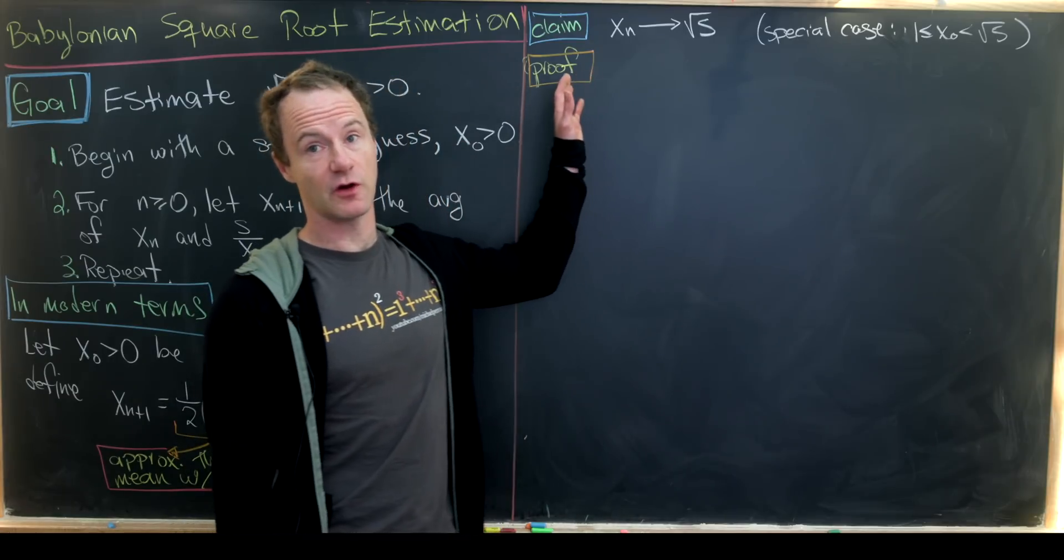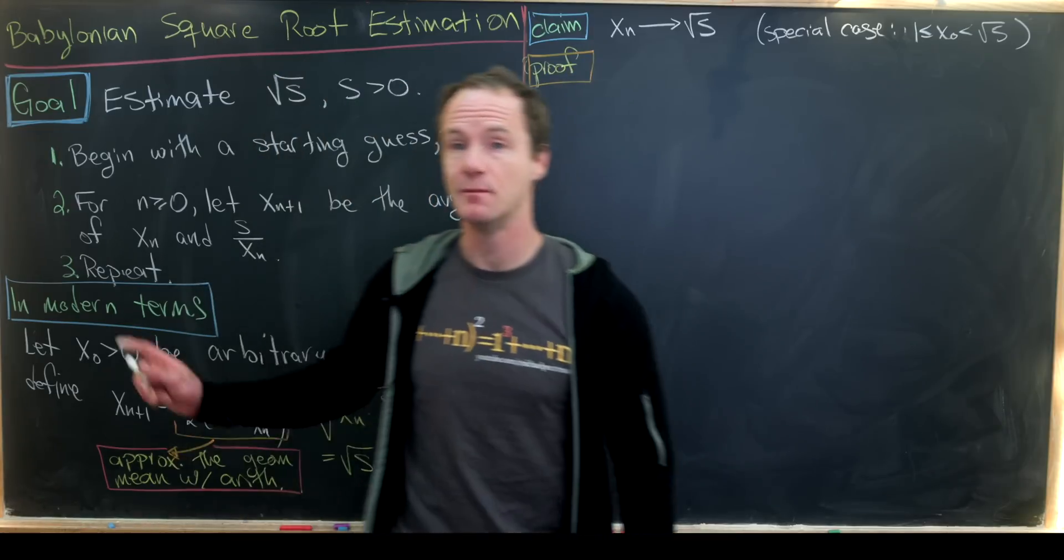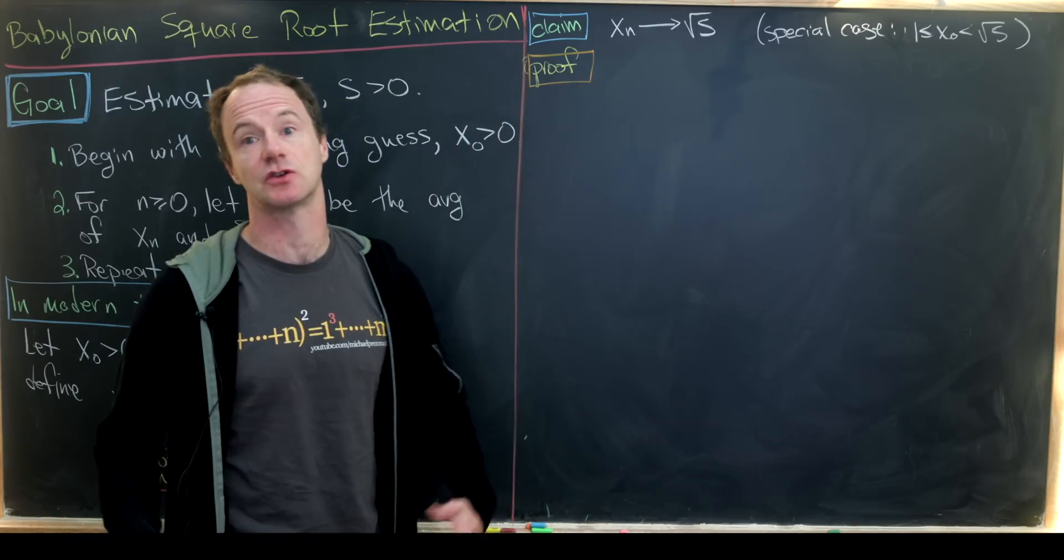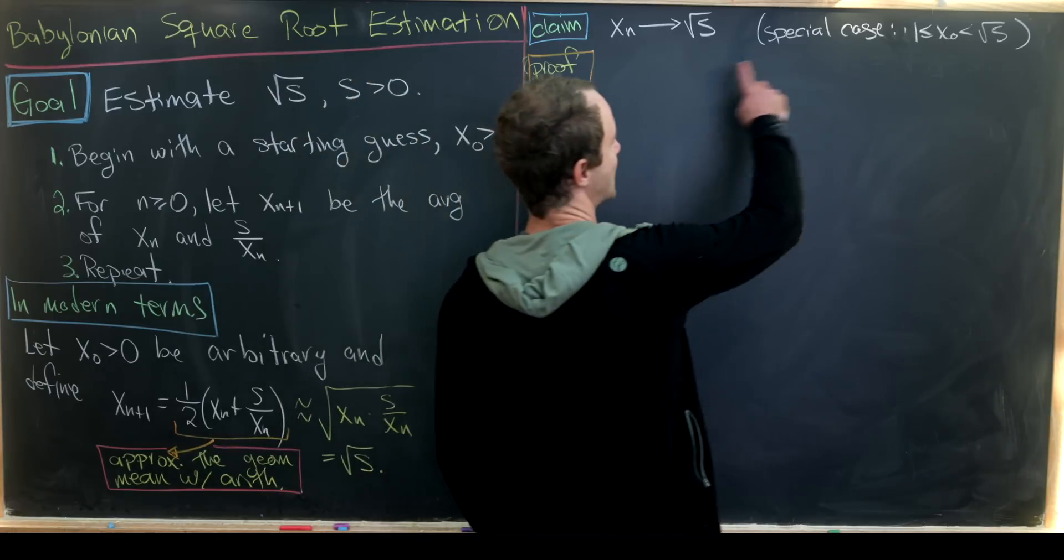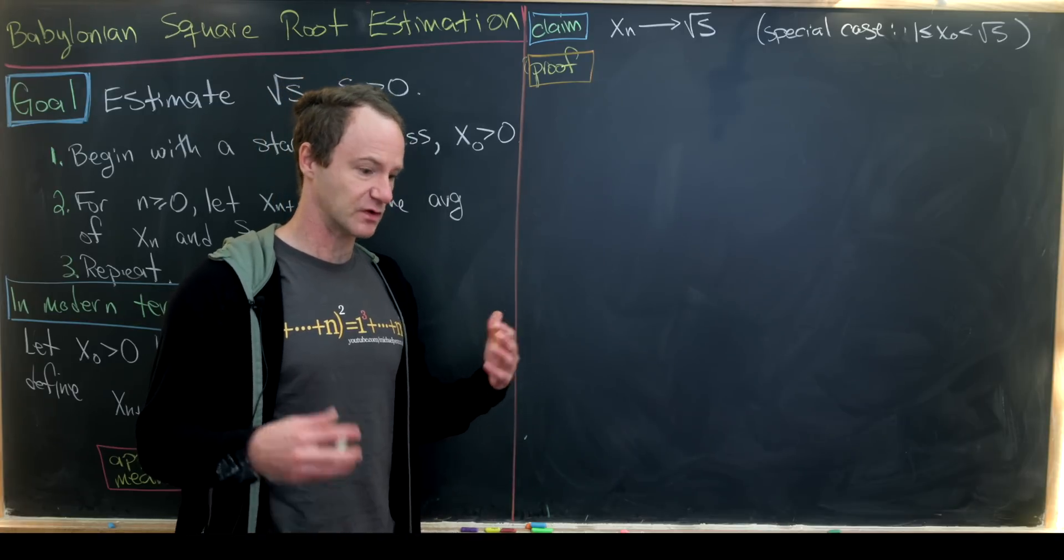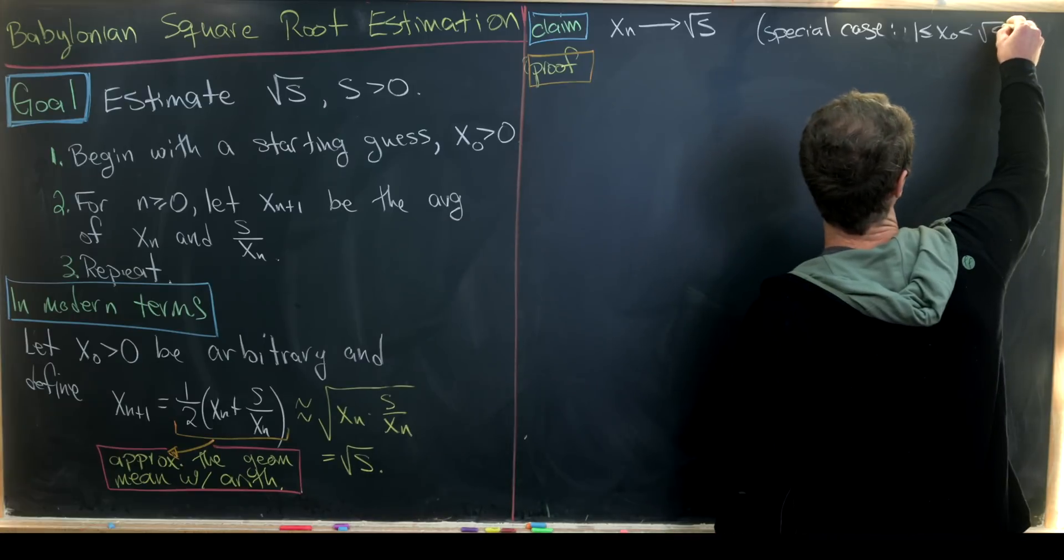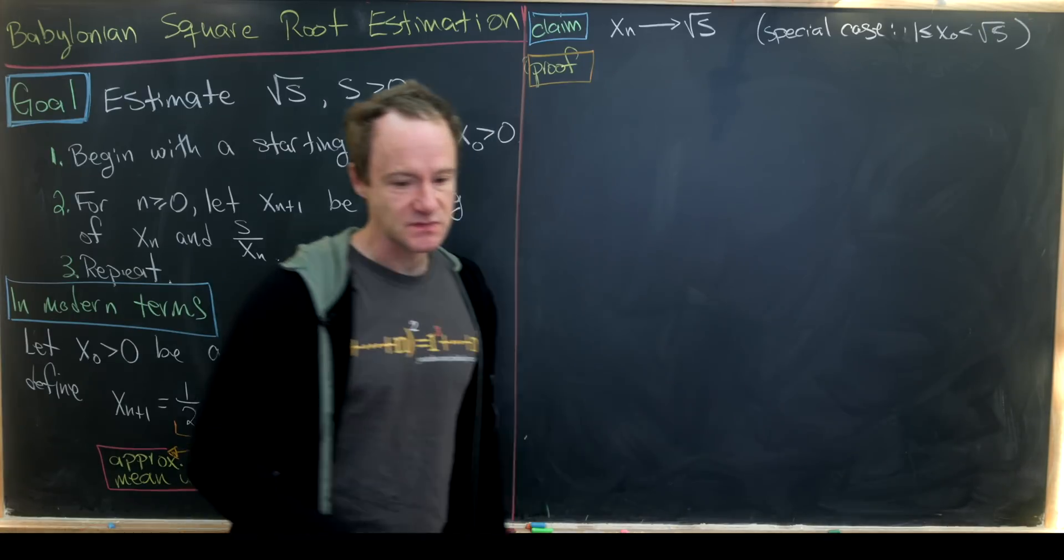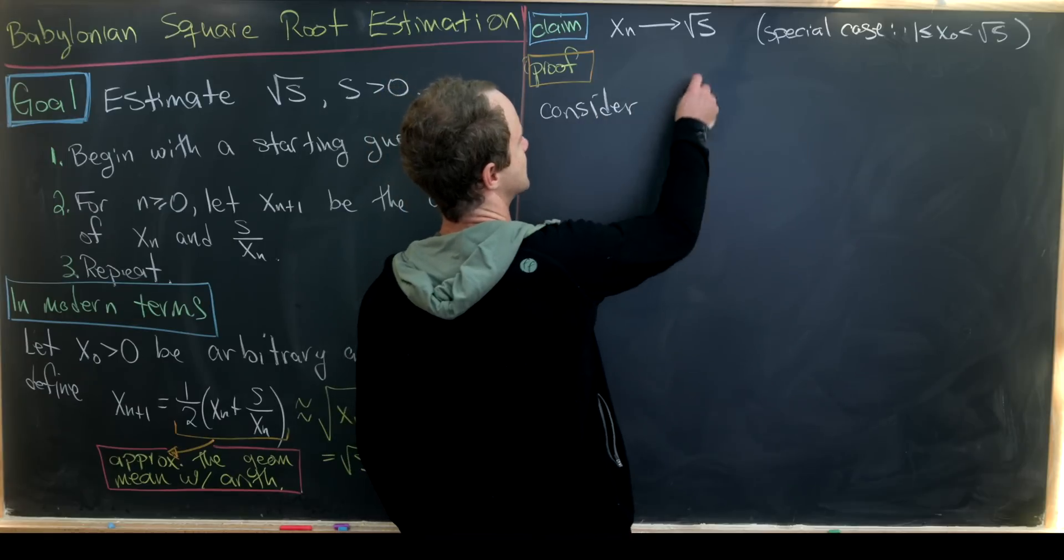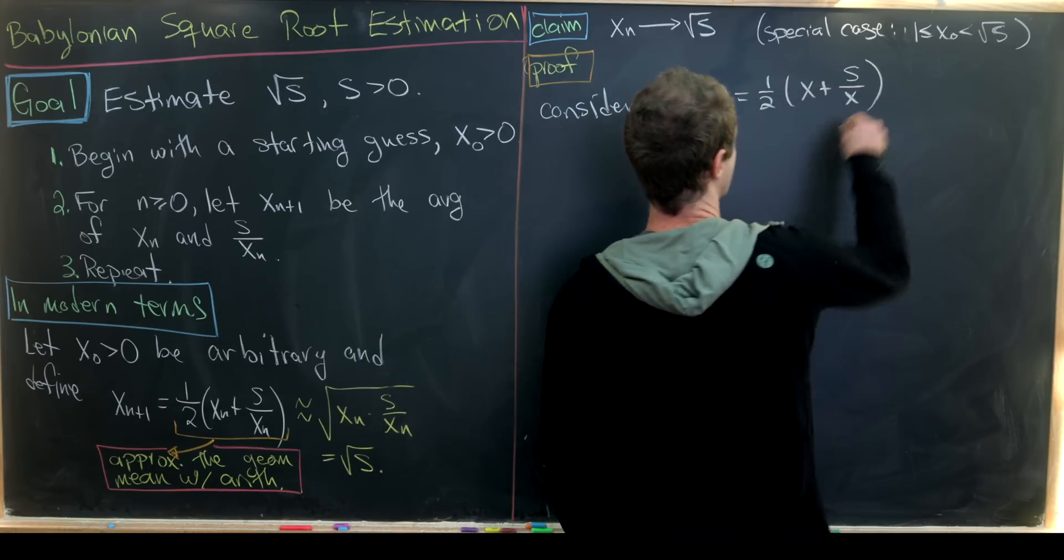We're going to finish this video off by proving this claim that our recursively defined sequence indeed converges to the square root of s, meaning this Babylonian approximation method is a really good approximation method. In fact, we'll look at a special case where our initial guess is between 1 and the square root of s. You can prove a result in parallel just with a few tweaks for the values when x is bigger than the square root of s, but we won't worry about that here.